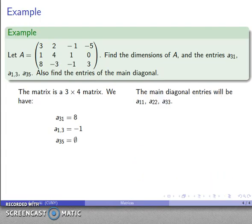And finally my main diagonal, those are going to be the entries where the row and column number are the same. So that's A_11, A_22, A_33. So I can pick those off: first row, first column is three, second row, second column is four, third row, third column is going to be negative one. And there isn't going to be any entries after that.